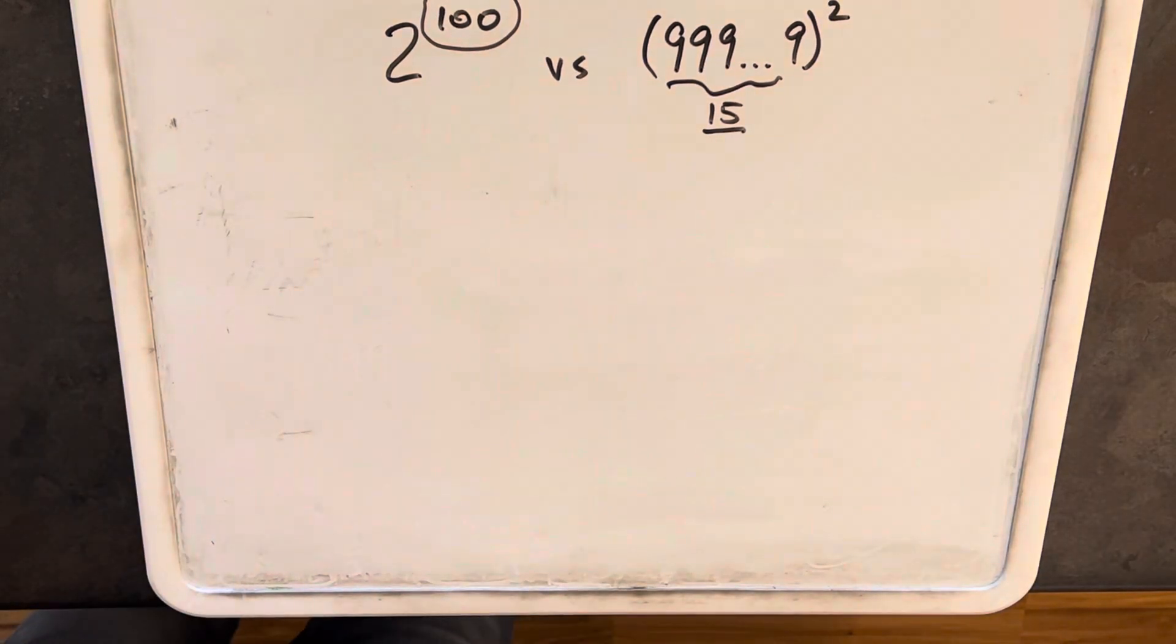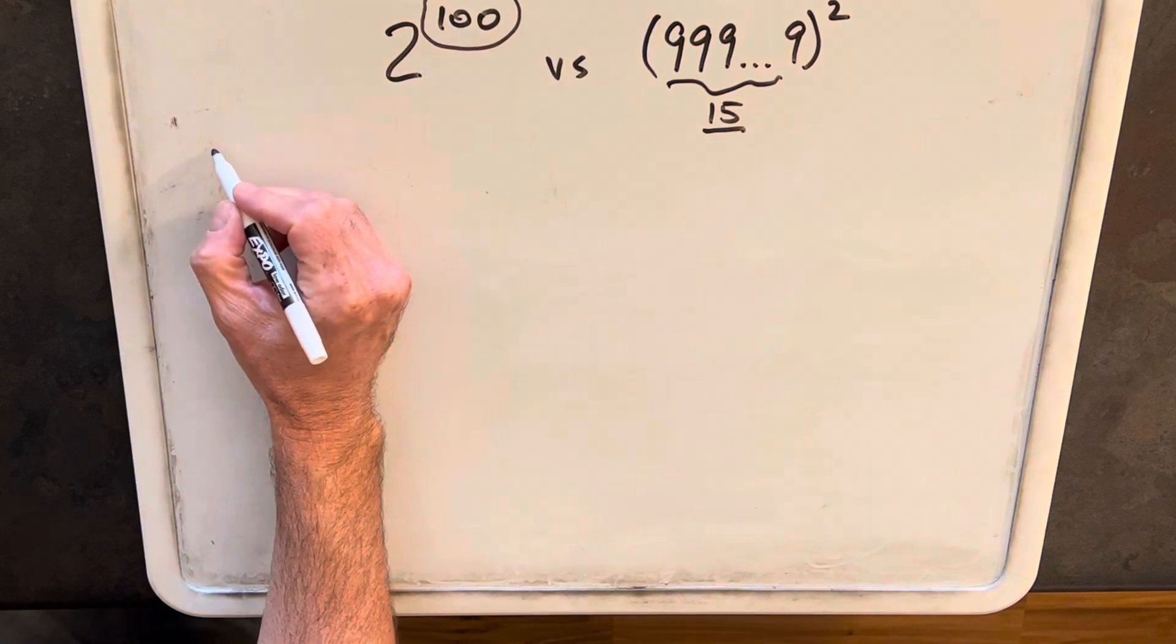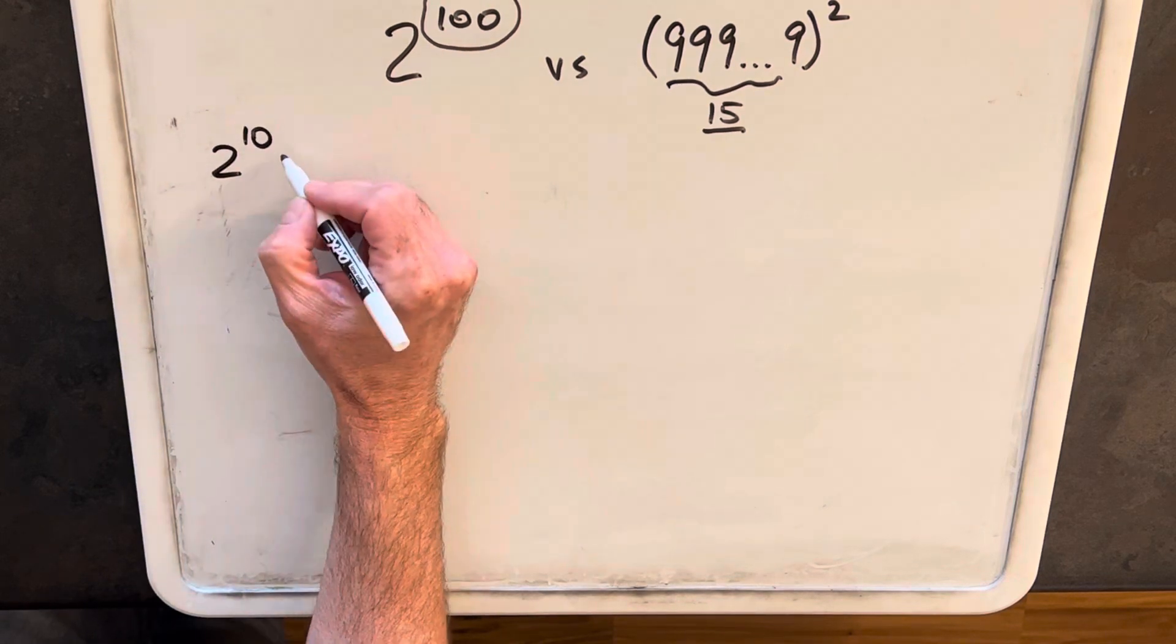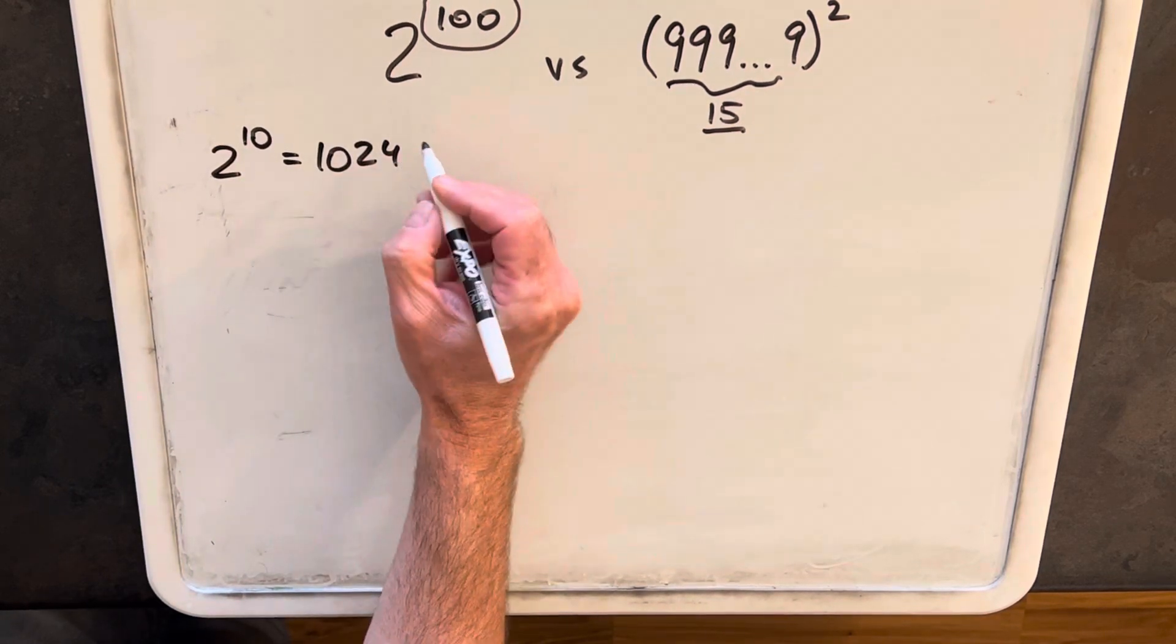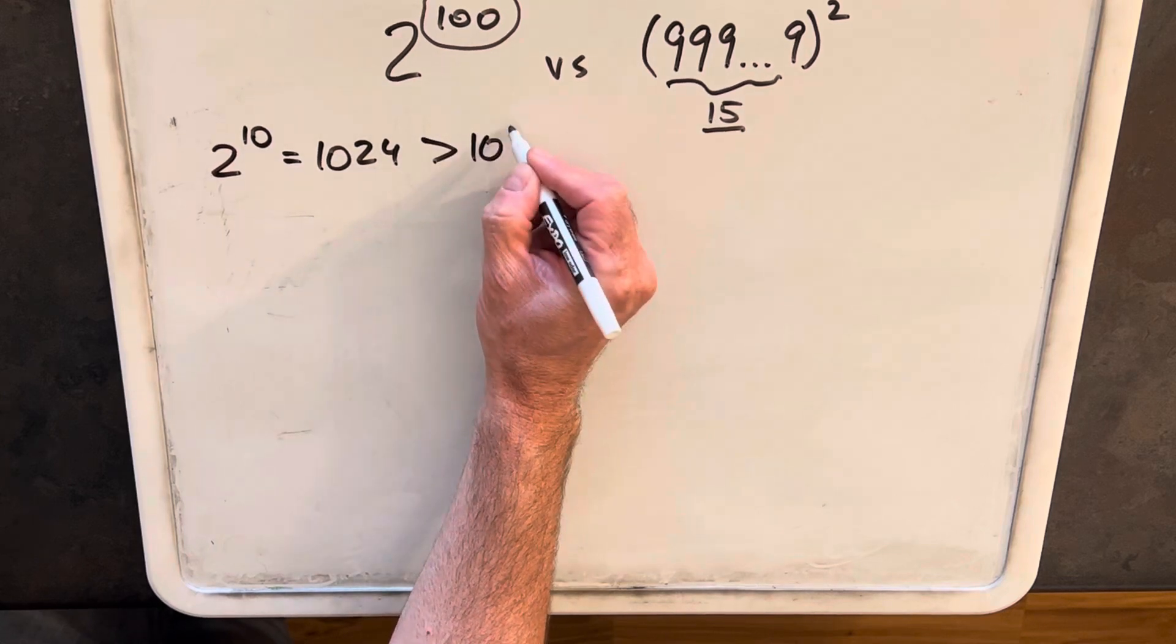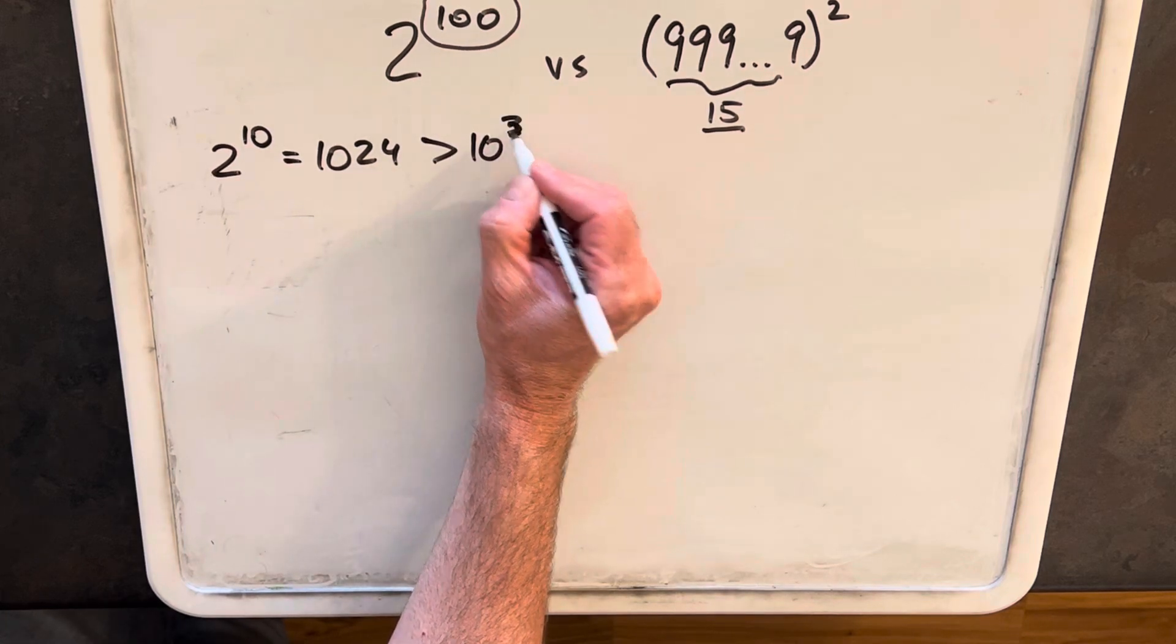But first we'll do something similar to what we did in the last problem. We found out in the last problem we established that 2 to the 10th equals 1024, which is greater than 10 cubed, and we can use that again.